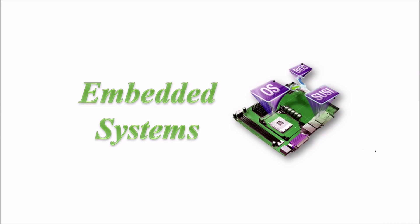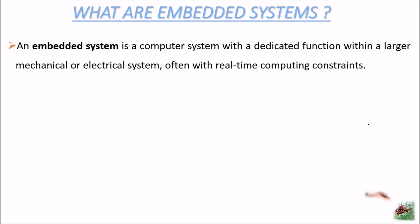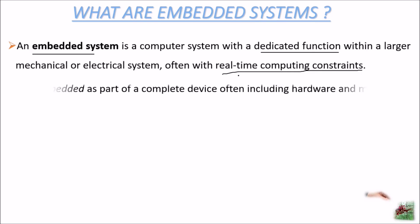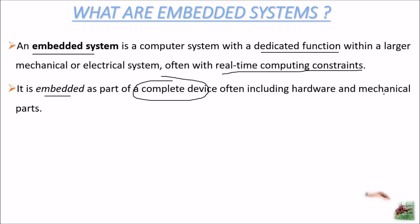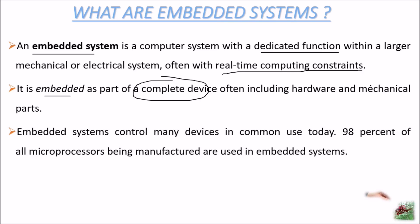Let us talk about embedded systems today. What are embedded systems? An embedded system is a computer system with a dedicated function within a larger mechanical or electrical system. There is a system in which an embedded system has a specific function, often with real-time computing constraints. It is embedded as part of a complete device, often including hardware and mechanical parts. Embedded systems control many devices in common use today.